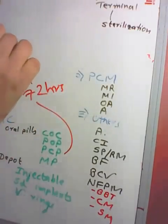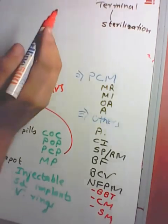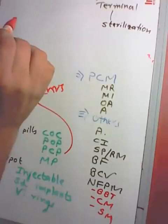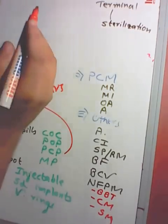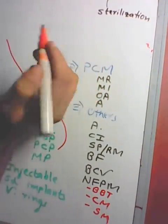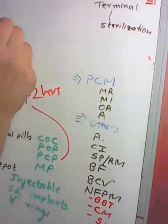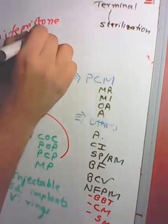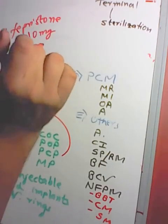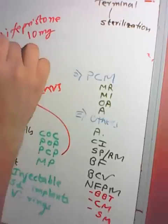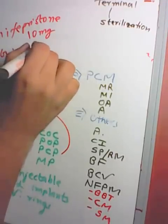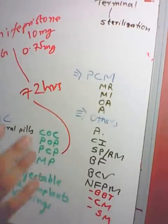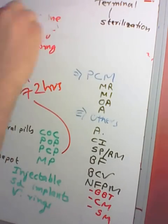Post-coital contraceptive pill methods include: hormonal — levonorgestrel 0.75 mg tablet, or mifepristone 10 mg once within 72 hours. These must be used within 72 hours to be effective.